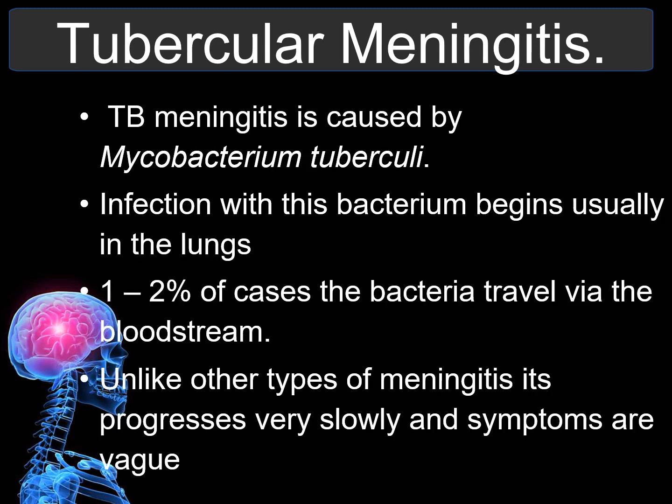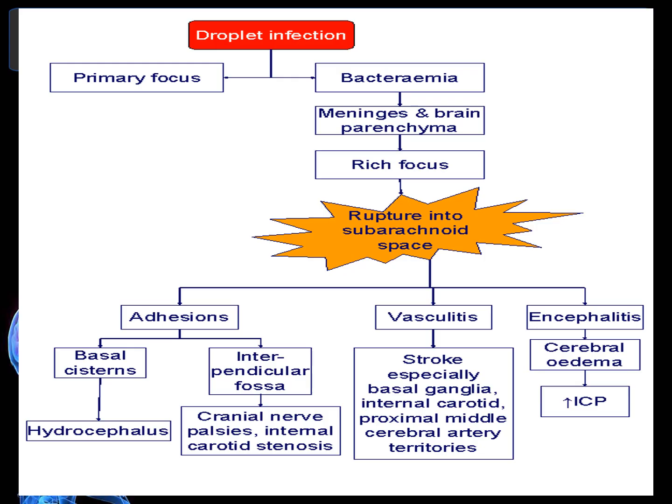Tubercular meningitis, or TB meningitis, is caused by Mycobacterium tuberculosis. Infection begins in the lungs, and in 1–2% of cases the bacteria travel via the bloodstream. TB is not necessarily associated with a particular group and can cause an aggressive type of meningitis that progresses rapidly, though unlike other types it also can progress slowly with vague symptoms. It spreads via droplets from the primary focus, with complications including adhesions, vasculitis, or encephalitis.